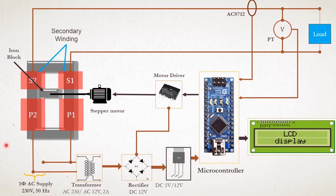This transformer is constructed using CRNO material, which is silicon steel, with copper winding. We can see in another video where we discuss how to design a single-phase or three-phase transformer in detail.